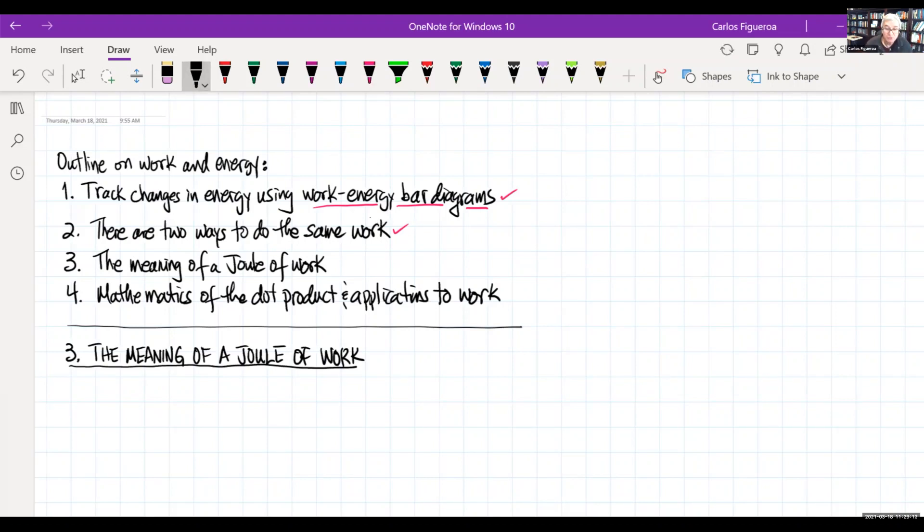When I talk about the units of work, we have to talk about force, which is measured in Newtons, and distance, which has a unit of meters. When I multiply both of these, this is known as a Newton meter, which is defined as a joule, typically written as J in calculations.